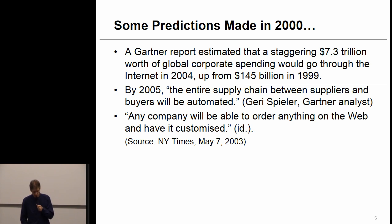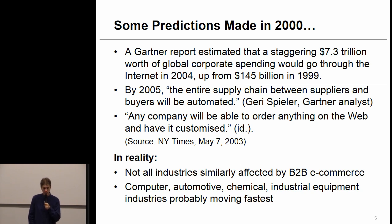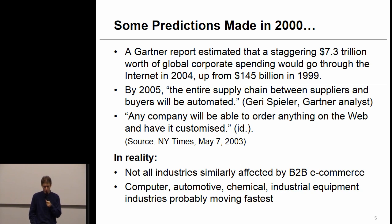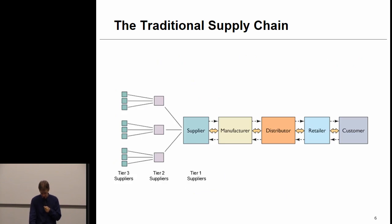Supply chain management has evolved a lot, but not all industries have been equally affected by B2B e-commerce. The ones that have been very sophisticated at doing B2B e-business are especially the computer industry — think about Dell — the automotive industry, the chemical industry, and industrial equipment. Those are the ones where a competitive advantage has been created by means of e-business in a supply chain management setting.